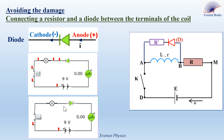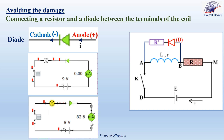In the second simulation, the anode of the diode is connected to the positive pole of the battery, whereas its cathode is connected to the negative pole. The diode is forward biased and acts as a closed switch, allowing the current to pass through it from the anode to the cathode. The ammeter reads 82.6 milliampere. We conclude that the diode allows current flow only when its anode is connected to the positive terminal and its cathode to the negative terminal of the battery.